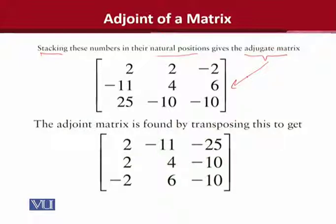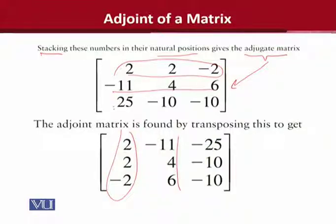As you can see, we have placed all the cofactors in their natural positions. But I hope you remember that this is not the adjoint we were looking for. Actually, the adjoint is the transpose of the adjugate matrix. So therefore, you can see that we converted the first row into the first column, and similarly second row into second column, and the third row we converted into the third column. So that now we can call it the adjoint matrix. Something that we were looking for.